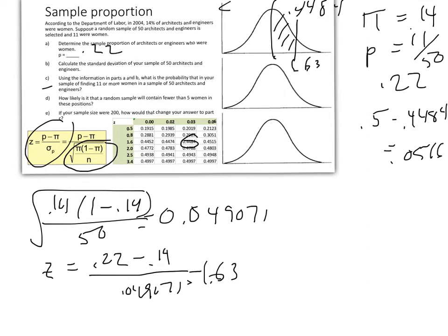So there's just over a 5% chance, 0.0516, of finding that many or more women engineers in a sample of 50, based on the population proportion of 14%. That's our answer for part C.